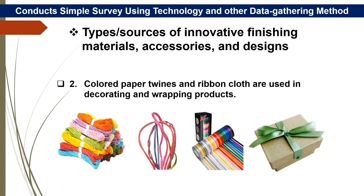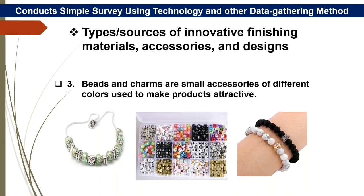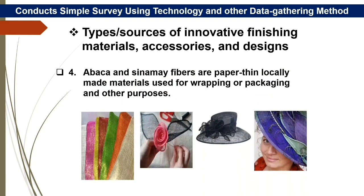Two: colored paper twines and ribbon cloth are used in decorating and wrapping products. Three: beads and charms are small accessories of different colors used to make products attractive. Four: abaca and cinema fibers are paper-thin, locally made materials used for wrapping or packaging purposes.